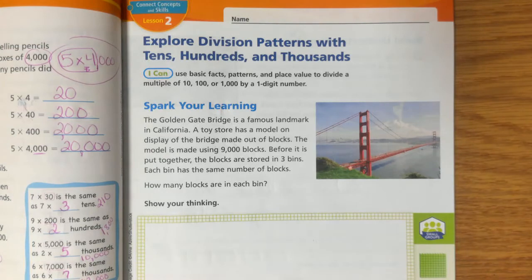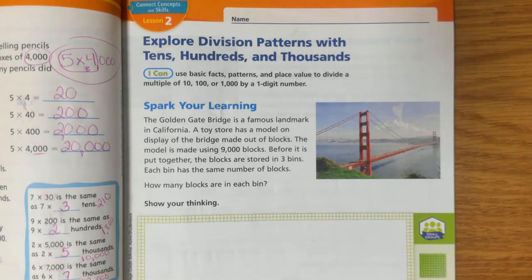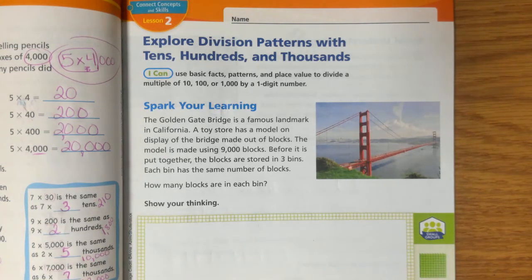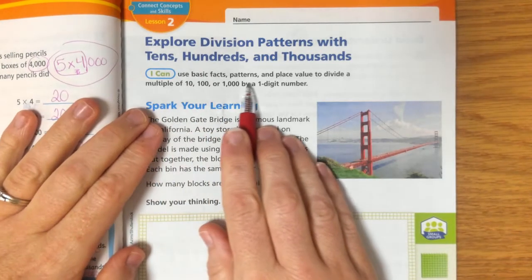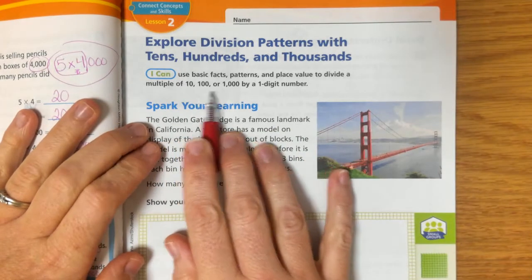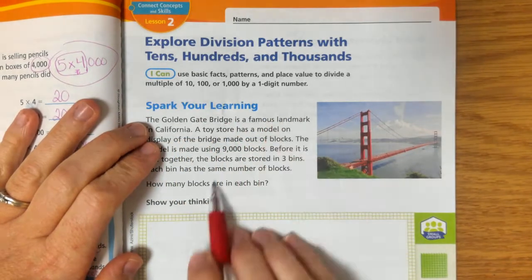So our first lesson is, like I said, module four, lesson two, and we're going to be exploring division patterns with tens, hundreds, and thousands. So remember last week, we were exploring multiplication patterns with the tens, hundreds, and thousands. And now we're going to be looking at the same kind of pattern, but with division instead of multiplication. So when you're done, you will be able to use basic fact patterns and place value to divide a multiple of 10, 100, or 1,000 by a one-digit number.